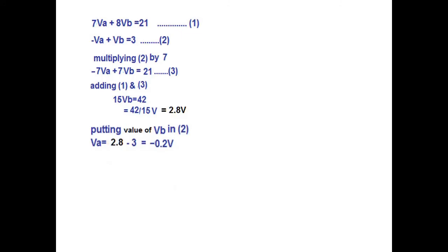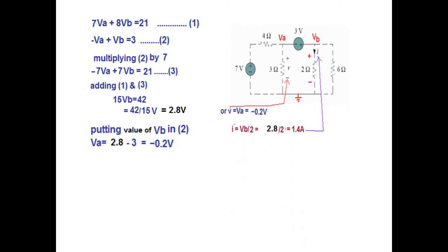Now putting the value of VB in equation number 2, we can get VA to be negative 0.2V. So VB is 2.8V and VA is negative 0.2V.